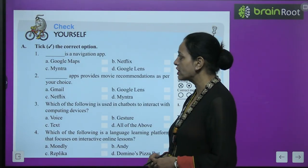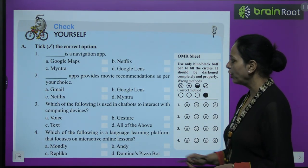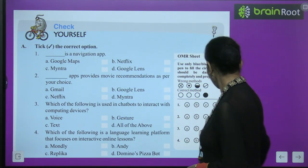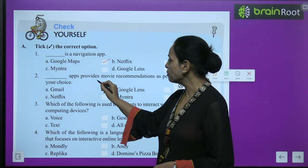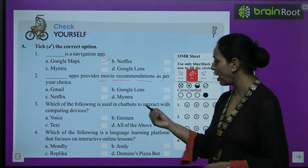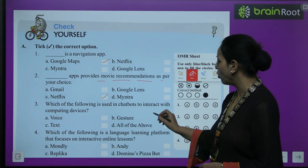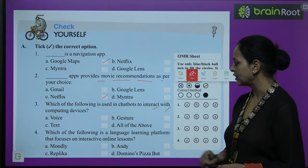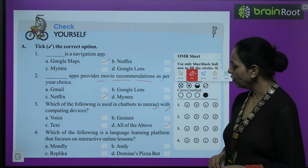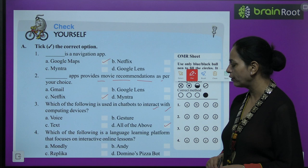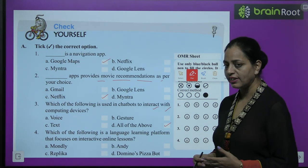Now we are doing the exercise. Check yourself. Part A — choose the correct option. First: which is a navigation app? Google Maps — through Google Maps we can navigate anywhere. Second: which app provides movie recommendations as per your choice? Netflix. Third: which of the following is used in a chatbot to interact with computing devices? Voice, text, gesture — all of the above. Fourth: which is a language learning platform that focuses on interactive online lessons? Mondly.